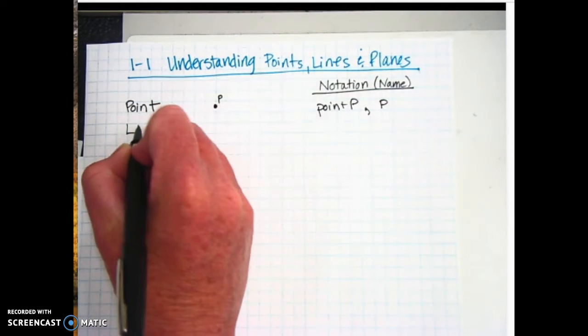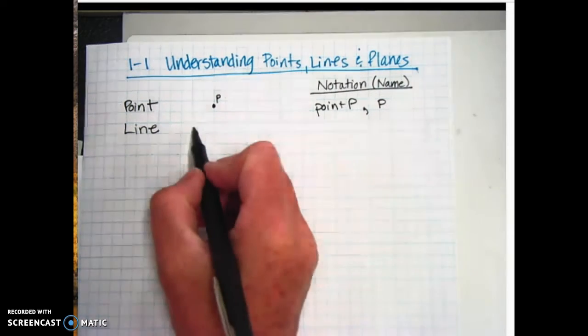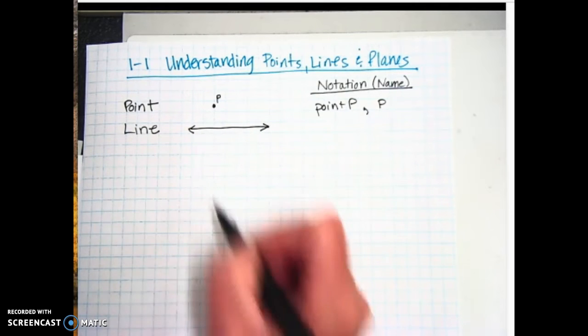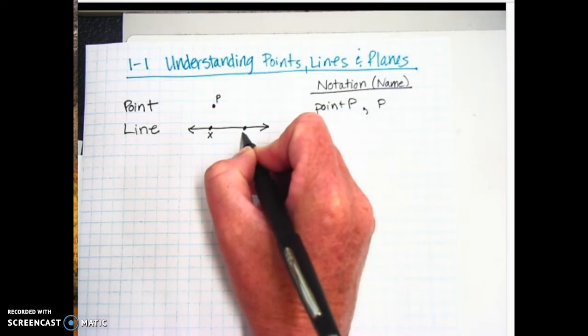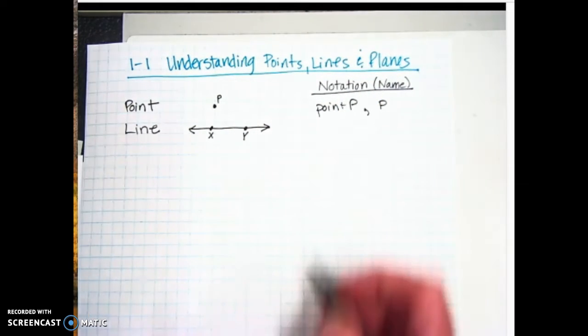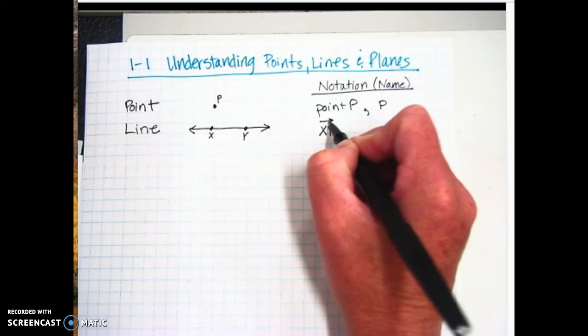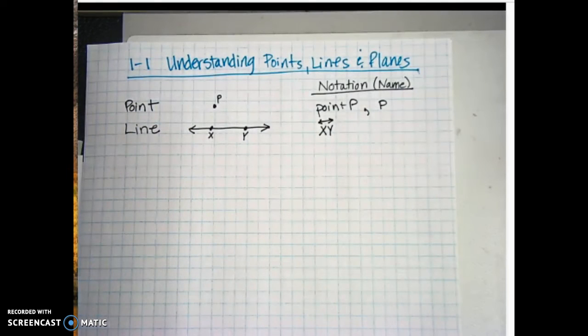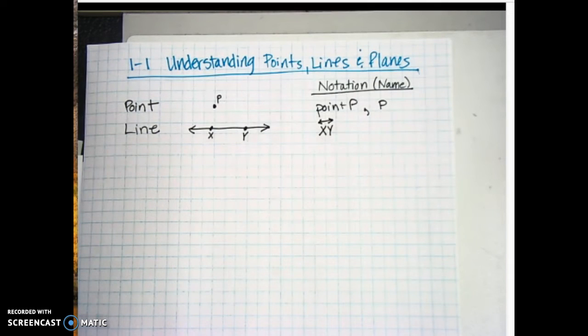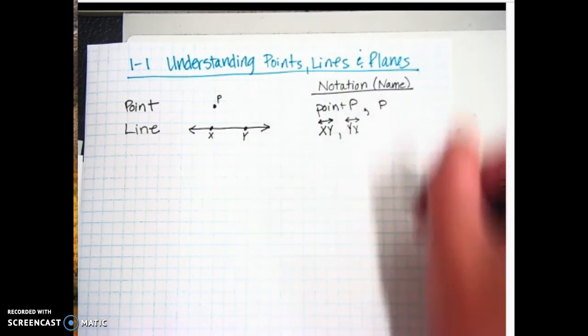The next one is line. So you've probably seen a line in Algebra 1. We usually put it on a coordinate plane in Algebra 1. In Geometry, we're just going to put it in a regular plane, but it basically looks like this, with arrows on both ends, meaning it goes on forever. We're going to put a point here and a point here, call them X and Y. Most of you have seen a line before, but you may not have notated it. In this case, we're going to call it line XY. So you write capital X and capital Y, and then over the top of it, you put a bar with two arrows going both directions. You can also call this one line YX. So you can flip the order, just like that.